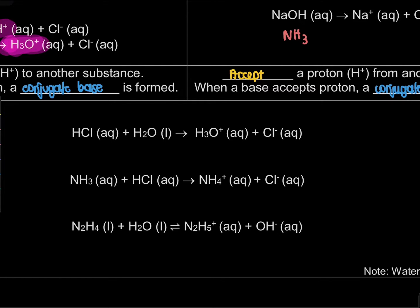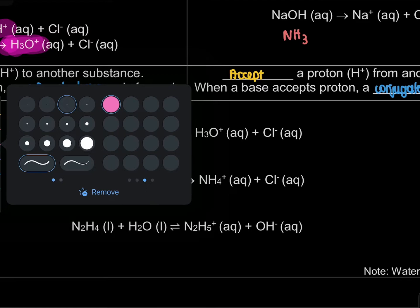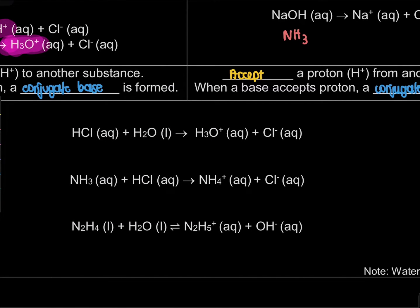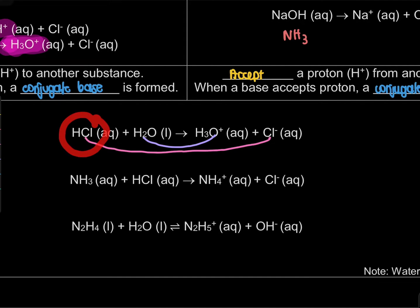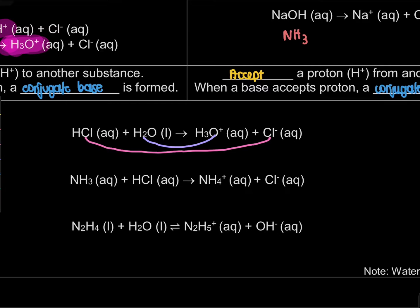To understand this, let's look at the equations and label the acid, base, conjugate base and conjugate acid. First, we pair up the species: HCl is paired with Cl⁻, and H₂O is paired with H₃O⁺. Looking at HCl, it has donated its proton, so when it becomes Cl⁻, that means HCl is our acid and Cl⁻ is what we call the conjugate base.